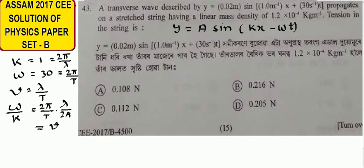v equals 30 by 1 equals 30 meter per second.